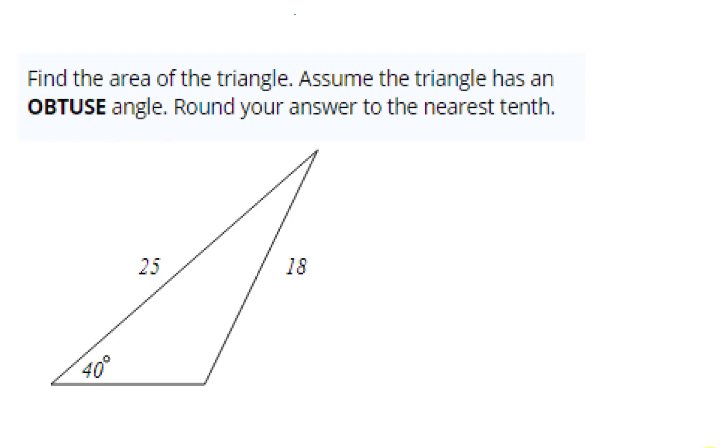We want to find the area of this triangle. It also says assume the triangle has an obtuse angle, so this angle right here is greater than 90 degrees.